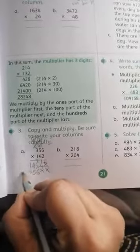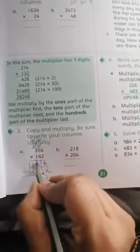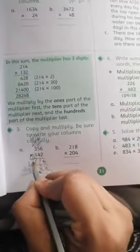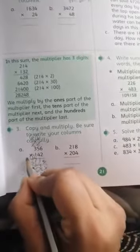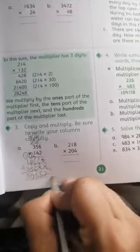1 times 6 is 6, 1 times 5 is 5, 1 times 3 is 3. Now you will add this: 2, 4 and 1 is 5, 7 plus 2 is 9, 9 plus 6 is 15. 1 is carry, 4 plus 1 is 5, 5, 4, 10.